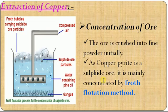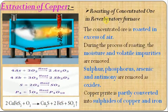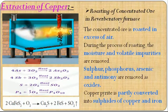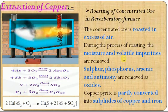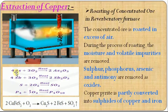The next is roasting of concentrated ore in the reverberatory furnace. The concentrated ore is allowed to fall into the reverberatory furnace, where air and oxygen are passed and it is heated with excess of air. When heated above 100 degrees, moisture will evaporate. Similarly, other volatile impurities are removed. Impurities such as sulfur, phosphorus, arsenic, and antimony are removed as their respective oxides — arsenic oxide, antimony oxide, sulfur dioxide, and phosphorus pentoxide. All impurities are evaporated as gases or vapors.